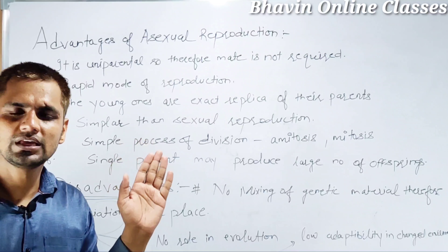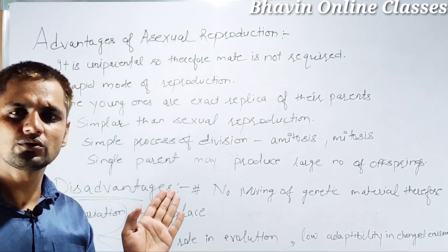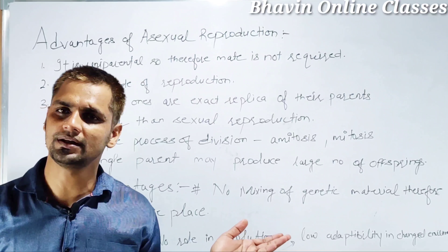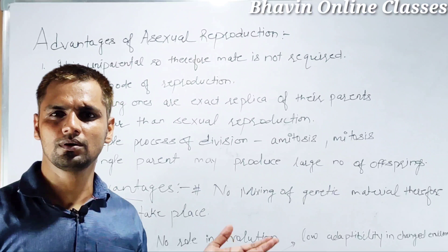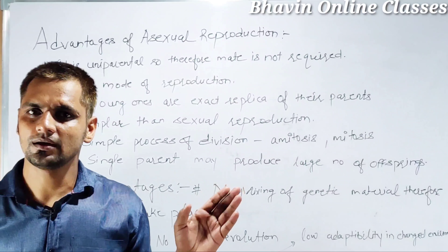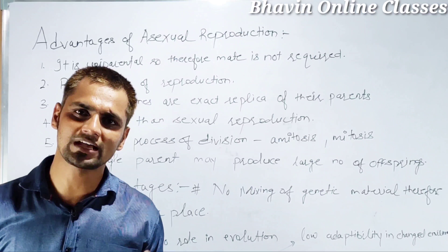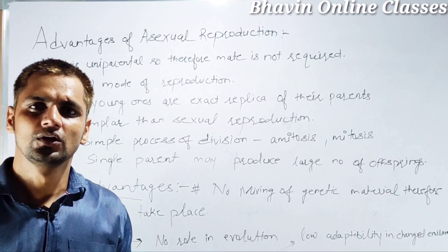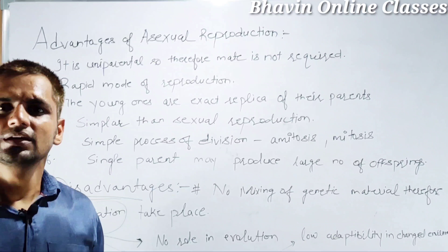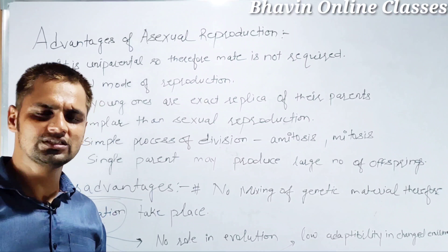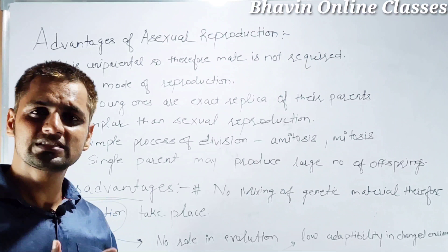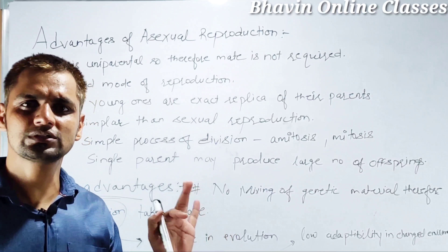The advantages of asexual reproduction are: first, it is uniparental, so there is no requirement of another mate. Second, it is a rapid mode of reproduction. Third, it takes less time. Fourth, offspring are exact replicas of their parents. Fifth, it is simpler compared to sexual reproduction.